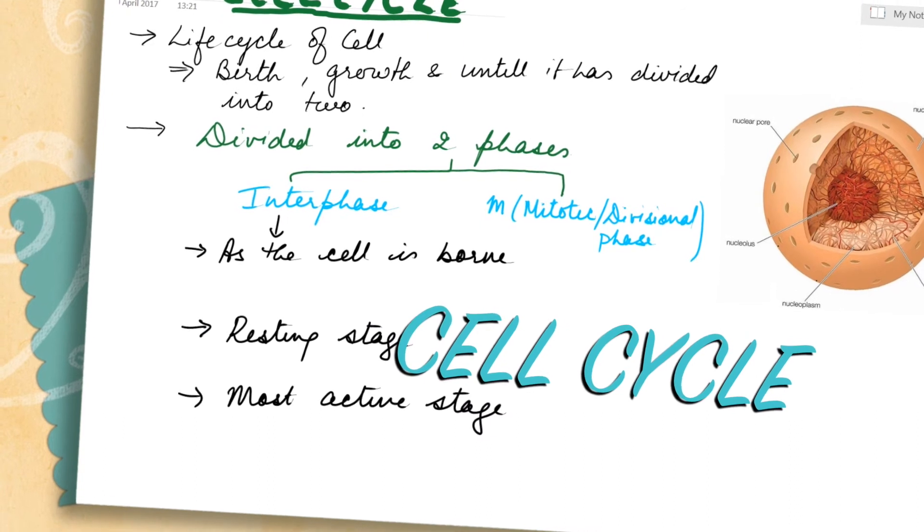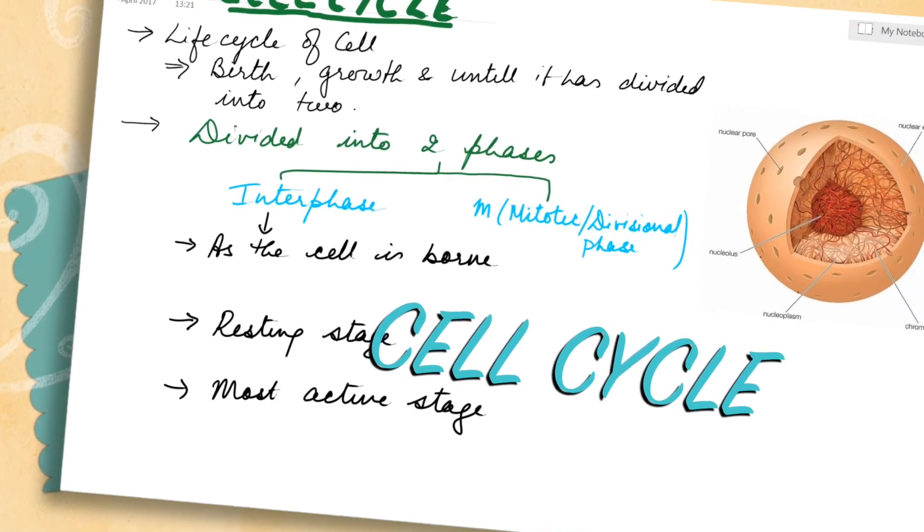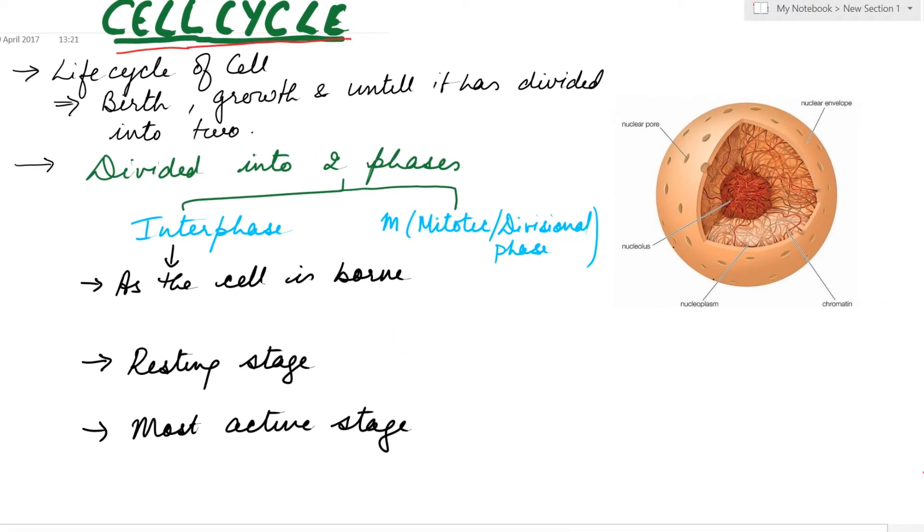Hello everyone, today's topic is cell cycle. Cell cycle is the complete life cycle of the cell, from the time when the cell is born through the complete growth period until it has divided into two. The cell cycle is divided into two phases: one is the interphase and the other is the M phase, which is the divisional phase.